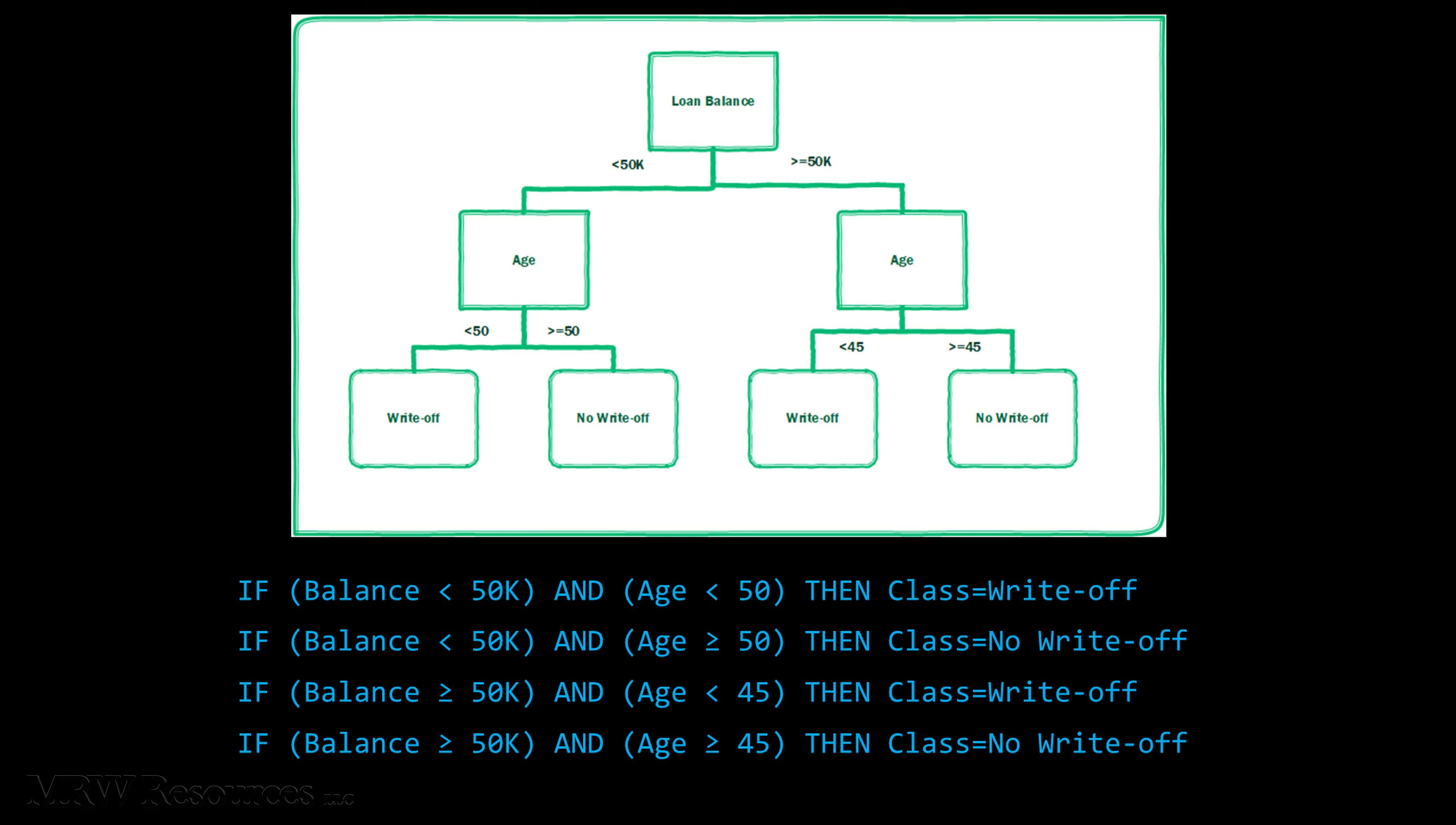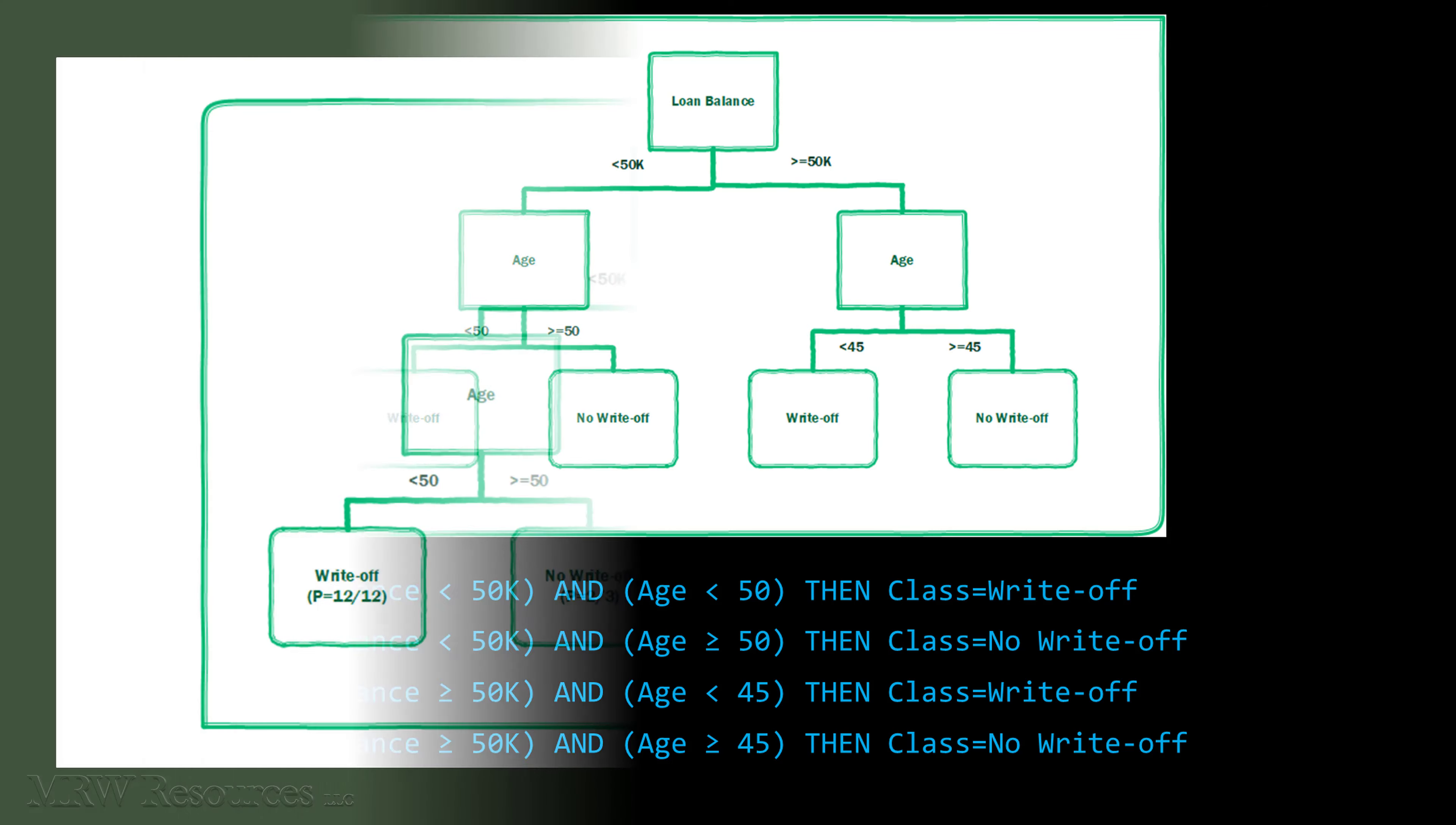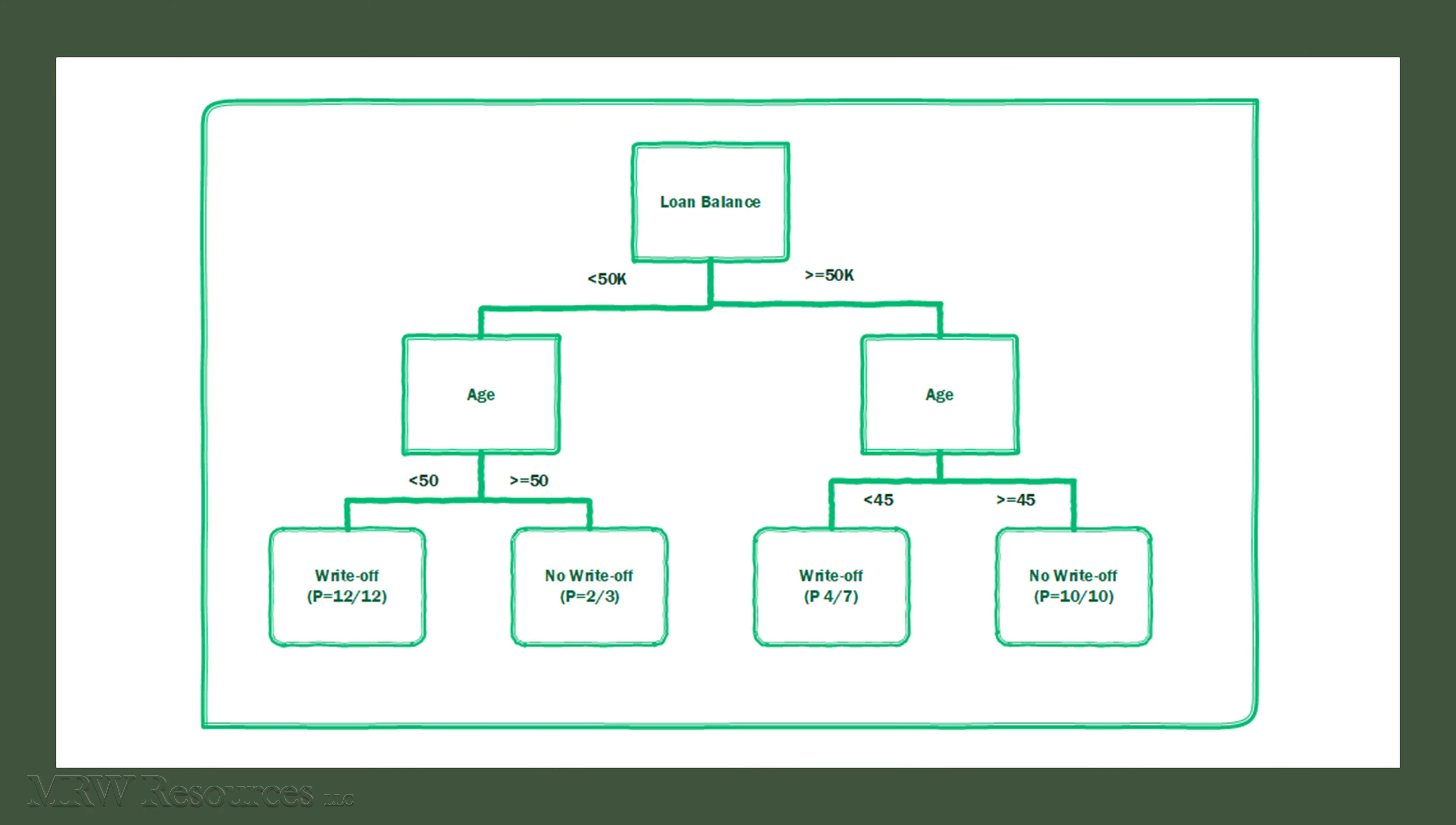Sometimes, rather than just flat-out predicting the categorical value, we use probability estimation in trees. This is important in situations where the probability of one case is very small - write-off of a loan, or even churn for a contract. In these situations, it's possible that every branch of the tree would predict no write-off or no churn because even in the riskiest of groups, most still fit within the majority category.